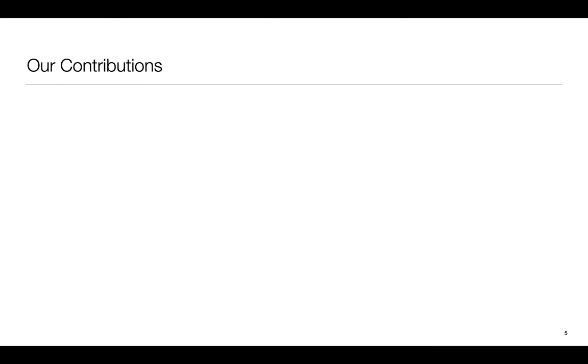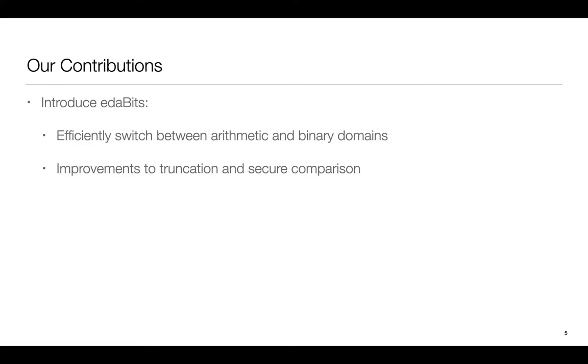These are our contributions at a high level. We introduce a new cryptographic object called EDABITS. EDABITS allow us to switch between arithmetic and binary worlds efficiently. Using EDABITS non-linear operations such as truncation and secure comparison become faster than previous works. EDABITS can be used across all corruption thresholds although we observe the most gain in the dishonest majority setting.